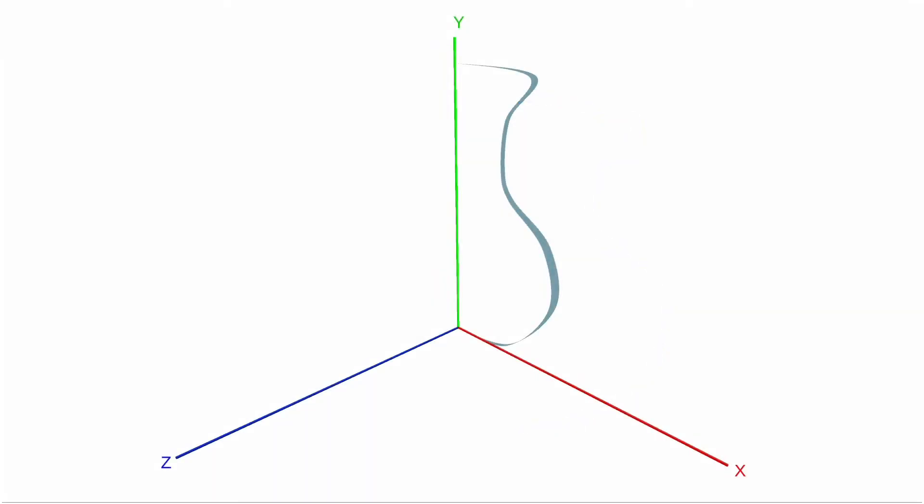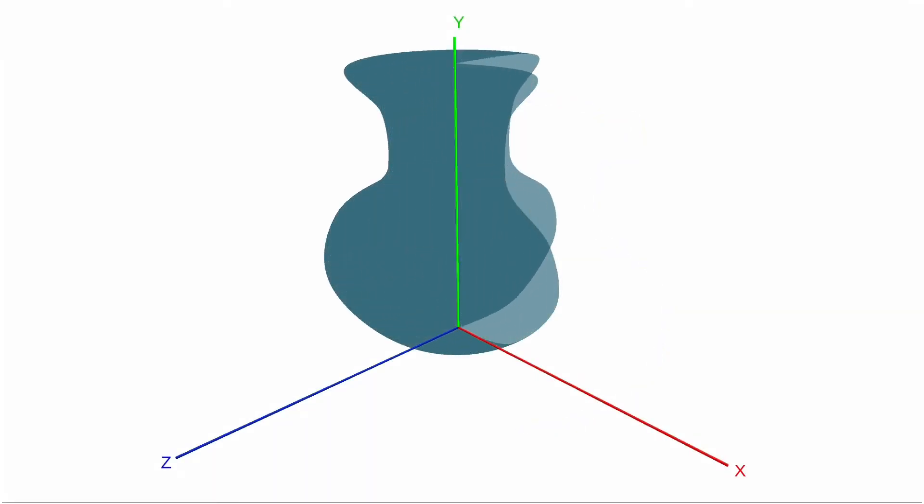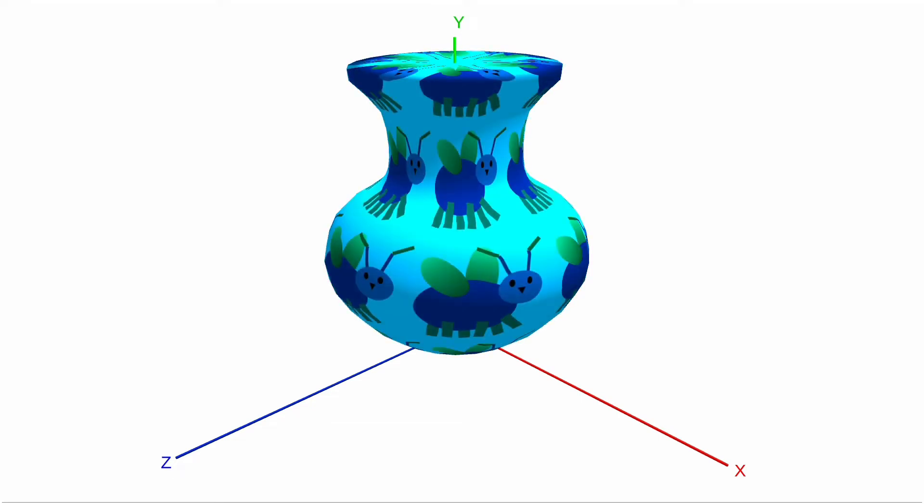We can actually generate any surface of revolution in the same way. Let's start with this curve shaped like the number 3. If we sweep it around the y-axis, we get this nice vase shape. We can shade it and texture it too.